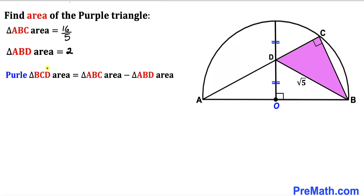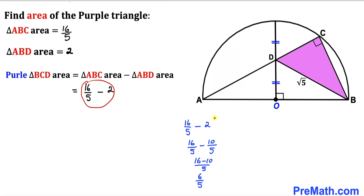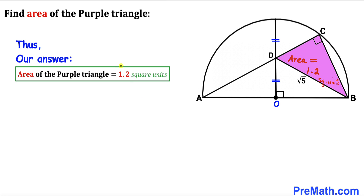Here's the final step. The area of purple triangle BCD = area of triangle ABC − area of triangle ABD = 16/5 − 2 = 16/5 − 10/5 = 6/5 = 1.2 square units. So the area of purple triangle BCD is 1.2 square units.